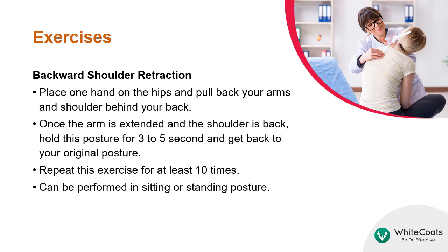In backward shoulder retraction, place one hand on the hips and pull back your arm and shoulder behind your back. Once the arm is extended and the shoulder is back, hold this posture for 3 to 5 seconds and return to your original posture. Repeat this exercise at least 10 times.